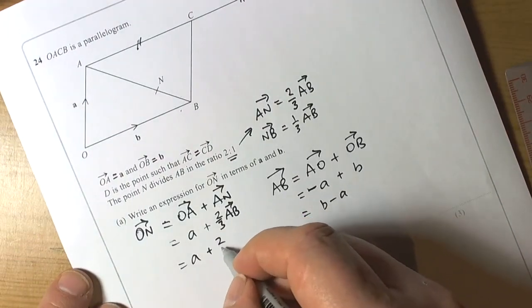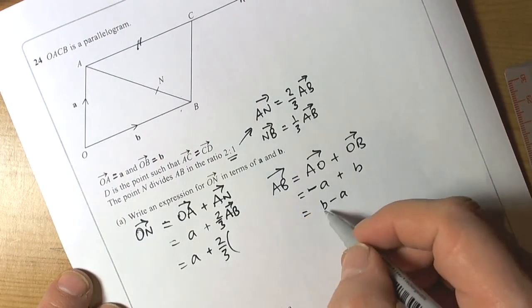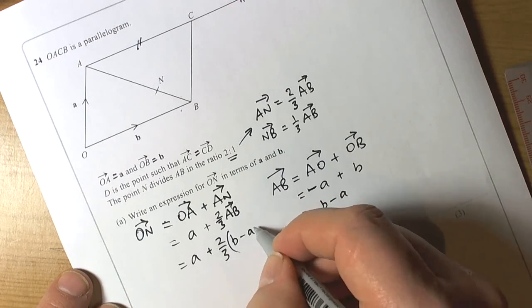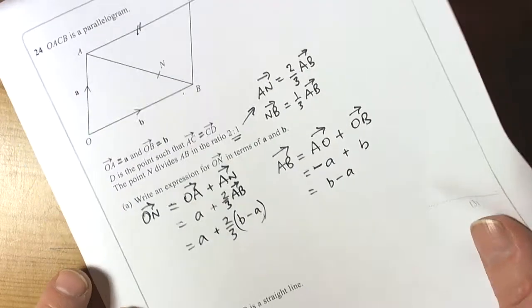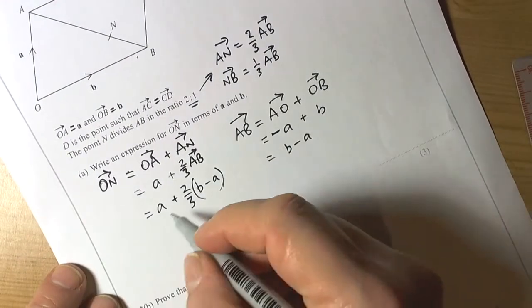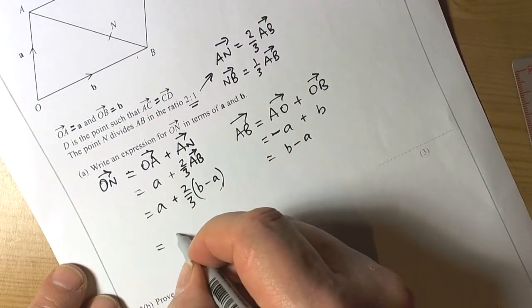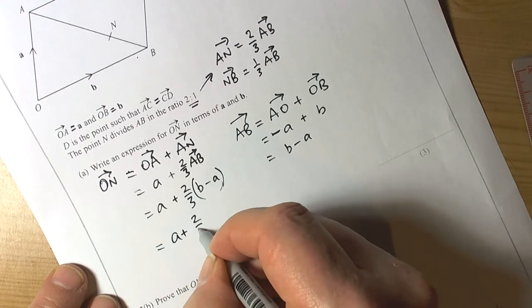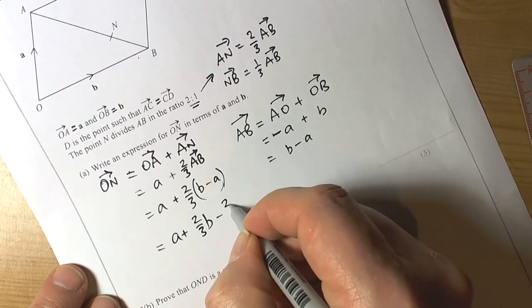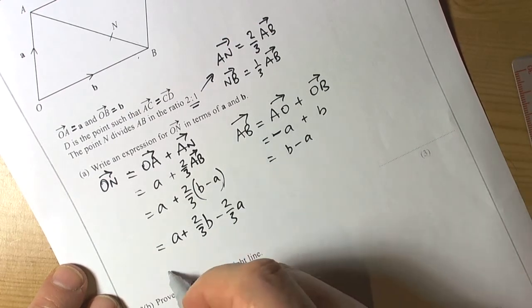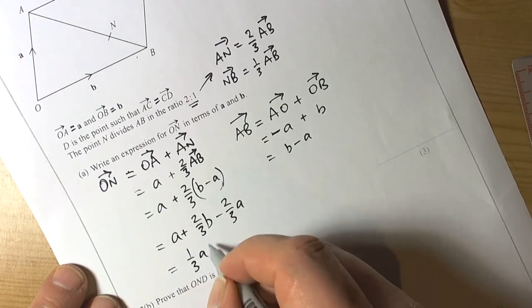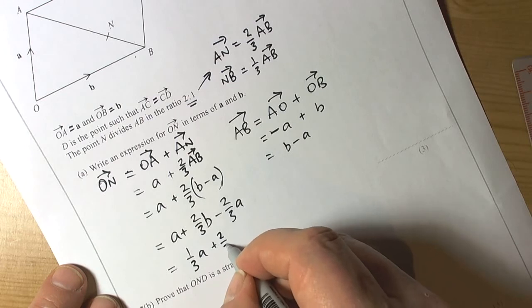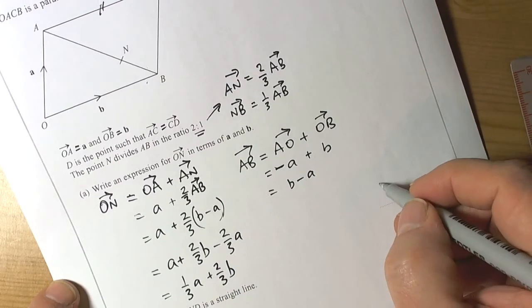So this is going to be 2 thirds of b minus a. Now because we're talking about two or more terms, it's really important you put that vector in a bracket so we can then write it out. So we've got a plus 2 thirds of b minus 2 thirds of a. So a take away 2 thirds of a is 1 third of a, and 2 thirds of b. So that's going to be the answer.